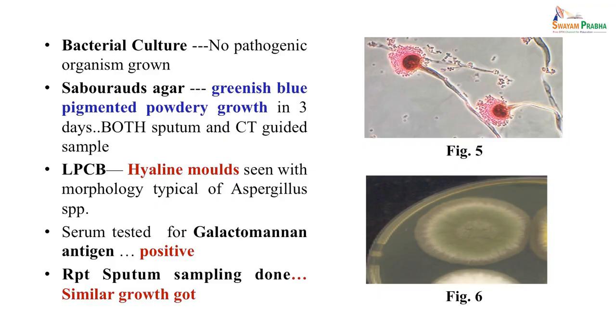On lactophenol cotton blue mount, structures typical of Aspergillus were found — sporangia and spores around them — seen in both samples. A serum sample was tested for galactomannan antigen and found to be positive. The sputum sample was repeated because spores can be present in the air and cause false growth, but again the same growth was obtained on sputum culture.